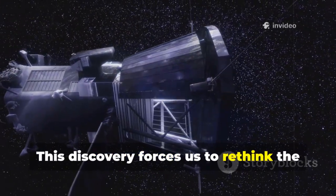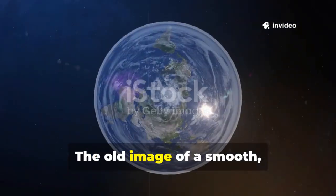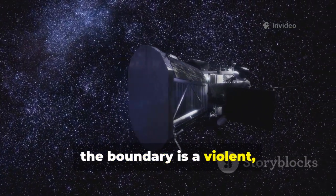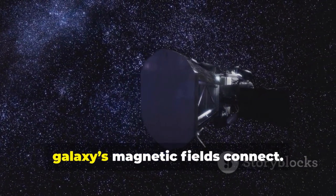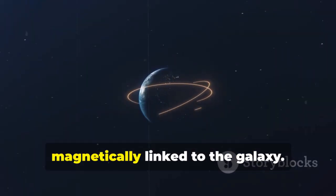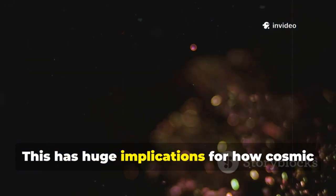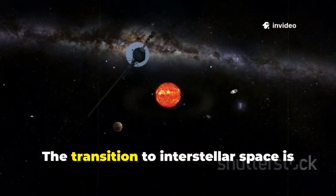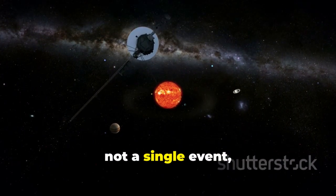This discovery forces us to rethink the solar system's edge. The old image of a smooth protective bubble is gone. Instead, the boundary is a violent, blazing frontier where the sun's and galaxy's magnetic fields connect. Our solar system isn't isolated, it's magnetically linked to the galaxy. This has huge implications for how cosmic rays and particles enter our system.